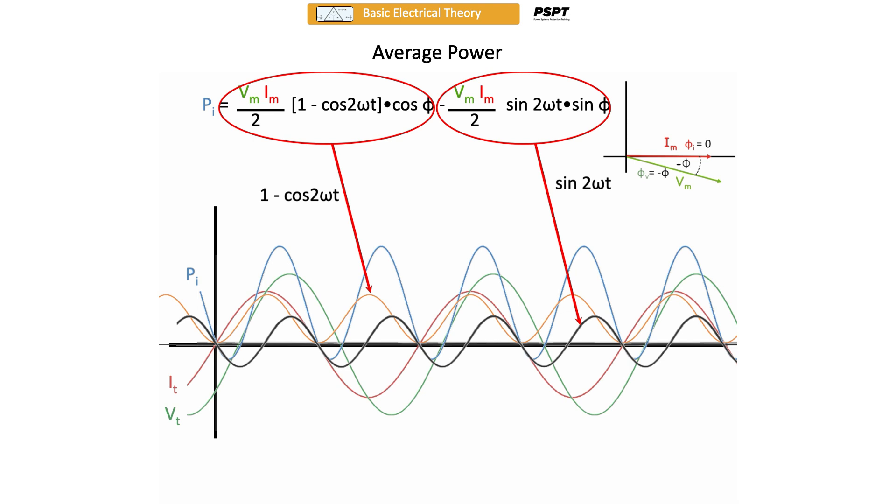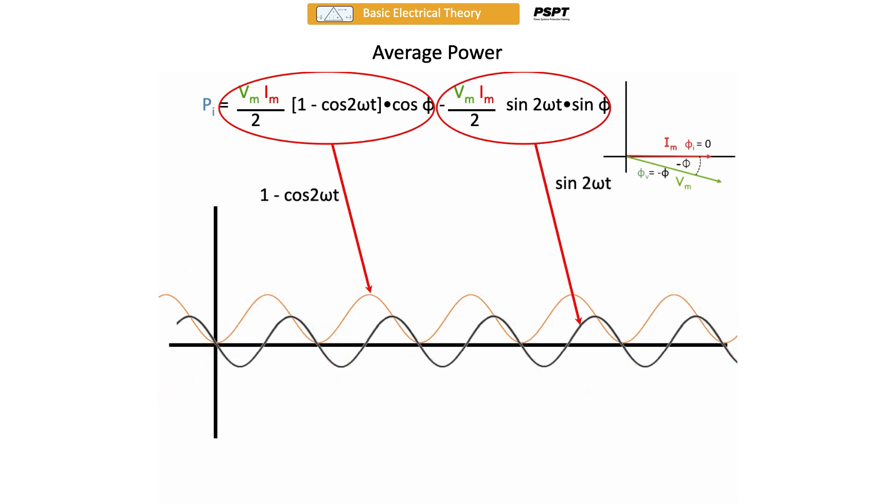And because it gets kind of confusing looking at all the rest of the curves that are there, I'm only going to plot the two portions of the equation, which is the Vmim over 2, 1 minus cos 2 omega t times cos phi, which is in orange. And the Vm, or I should say the minus Vmim over 2 times sin 2 omega t times sin phi, which is in black.